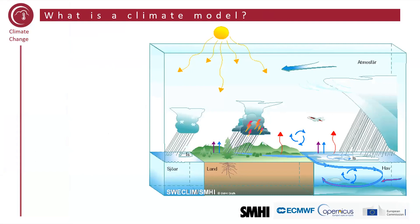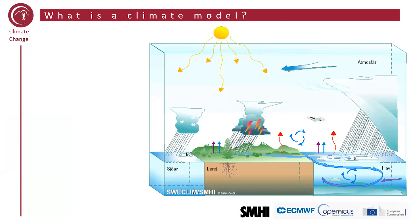Let's start directly with talking about the climate model. A climate model should represent the climate system and all its different compartments. It should say something about what's happening in the atmosphere, but also in the oceans and the land surface, and how these different parts of the system interact with each other. A climate model needs to describe not only winds and clouds in the atmosphere and currents in the oceans, but also all of the exchanges between these different processes in terms of fluxes like precipitation, evaporation, and radiation.